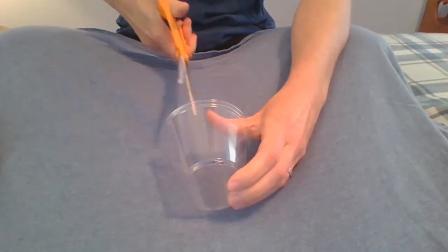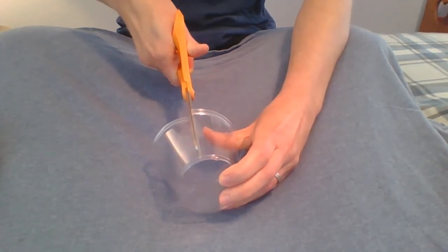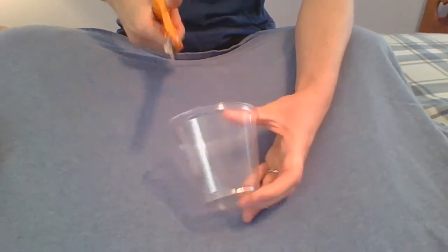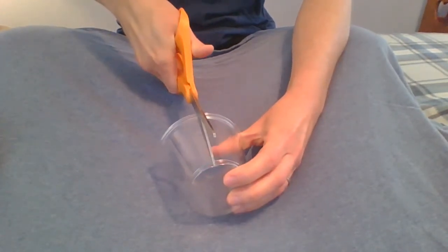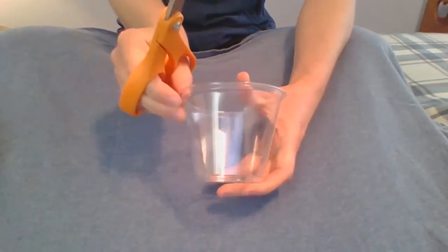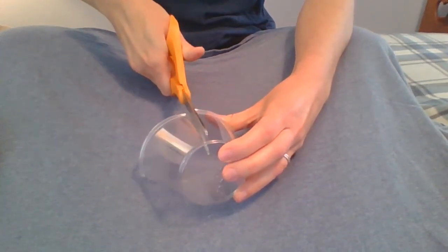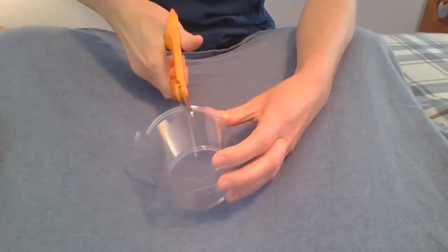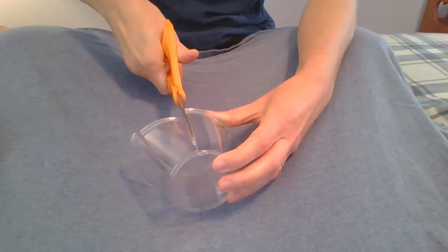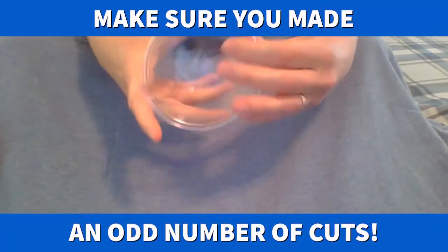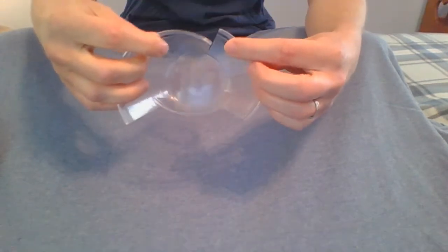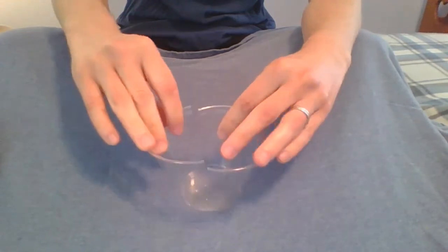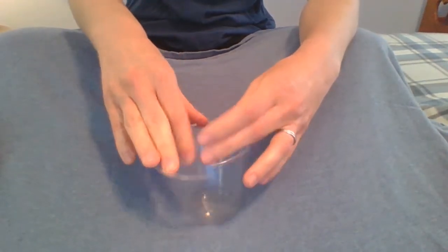I cut one strip there. They do not have to be perfectly equal. Two, three, four, and five. So what I've done here is cut lines into this plastic cup that are my warp lines. They're going to be the lines that hold my fabric or my string in.